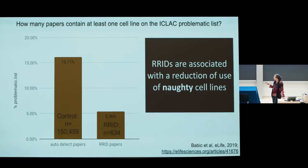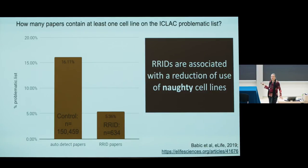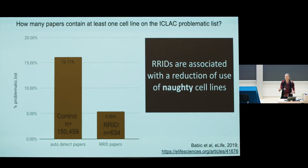Looking at the difference between 16% use of naughty cell lines in the general literature versus 5% use in RRID papers, we have declared victory. RRIDs, without additional help — just the fact that authors look at this list and see whether it impacts their paper — is associated with a very significant 67% reduction in the use of these bad reagents.